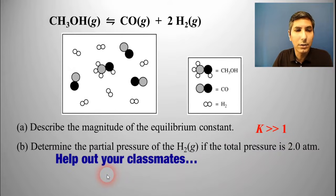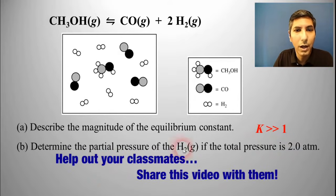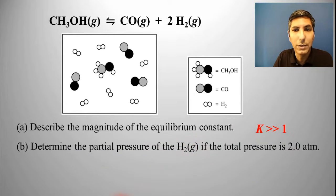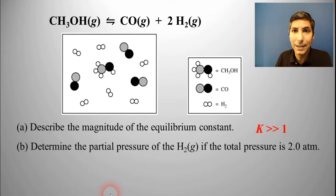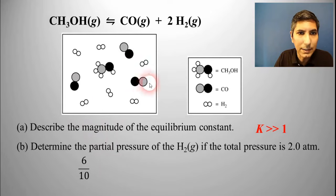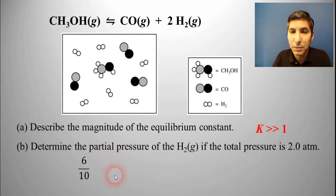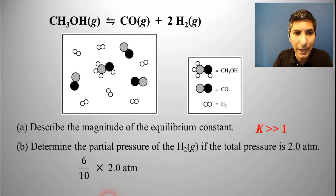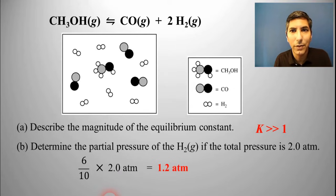In part B, it asks us to determine the partial pressure of the hydrogen gas if the total pressure is 2.0 atmospheres. To find partial pressure in a mixture, we take the mole fraction of that substance and multiply it by the total pressure. The mole fraction of H₂ is 6 out of 10, because there are 6 H₂ molecules out of the total 10 in the mixture. Multiplying by 2.0 atmospheres gives a partial pressure of 1.2 atmospheres for the hydrogen.